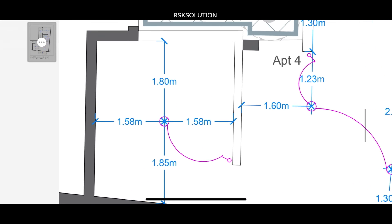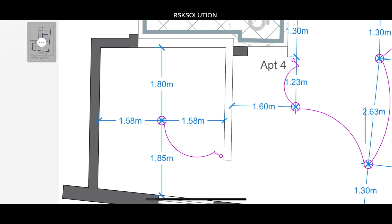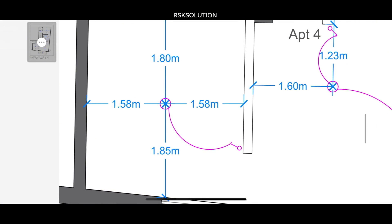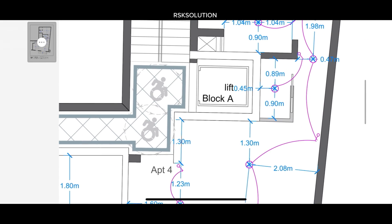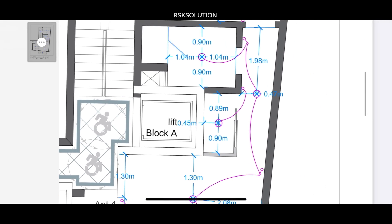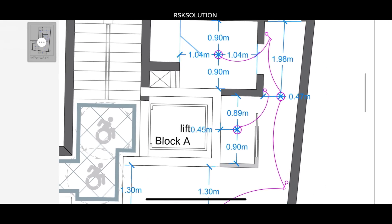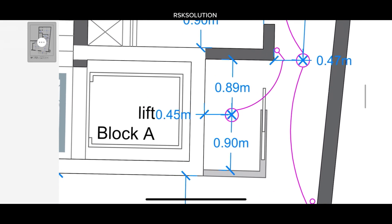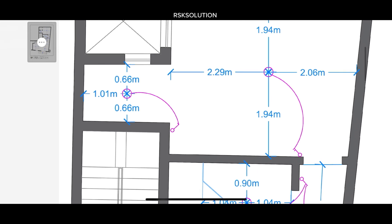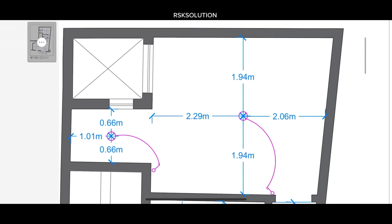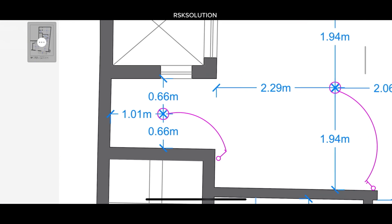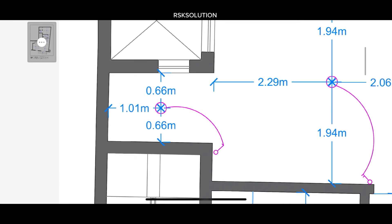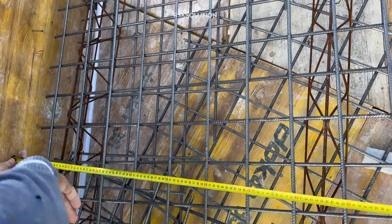Next to it we have a bedroom — it also describes where the light point is going to be. This is the corridor; we have a washroom. This is another bedroom — it also describes where the light point is going to be, and also the switches as well.